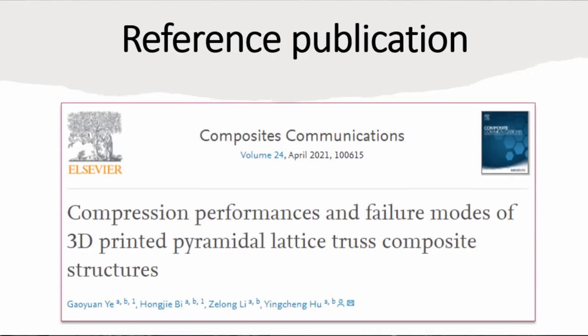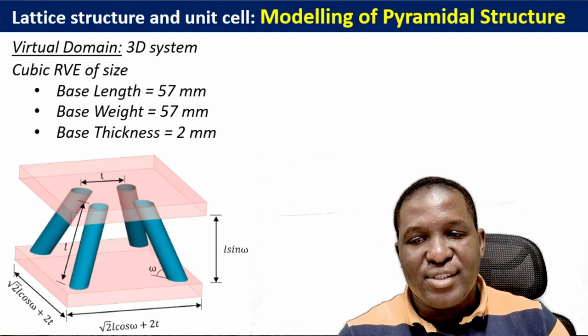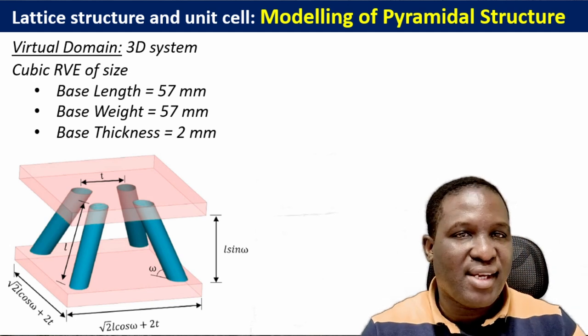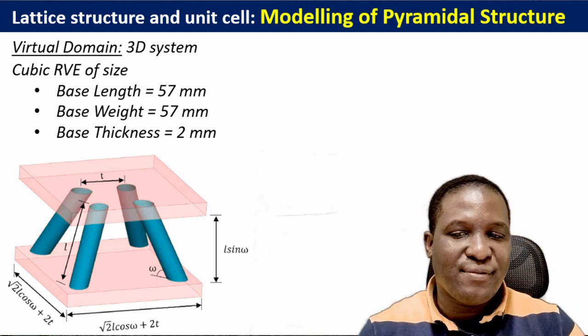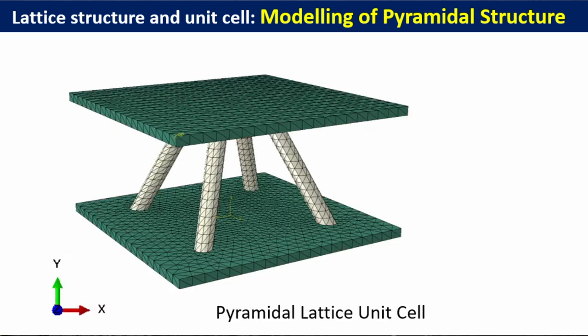The publication we're going to use is based on compression performance and failure modes of 3D printed pyramid lattice truss. The virtual domain looks like this — a pyramidal lattice structure composite. What we see here is the base related to the length of the truss; those dimensions are all linked together. The truss has a diameter of 4 degrees, the length is 30mm, the distance t is 18mm, and the strut height can be calculated from these values.